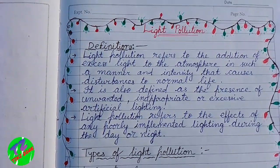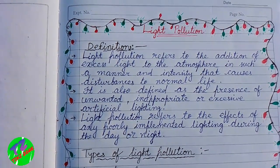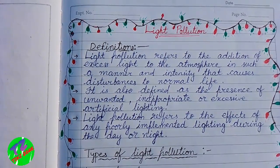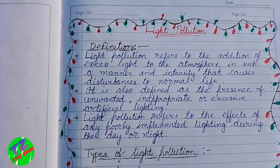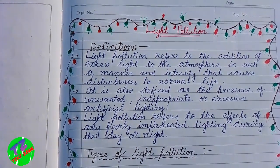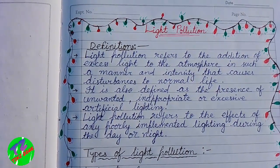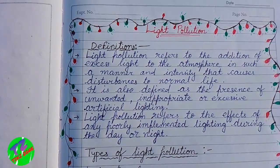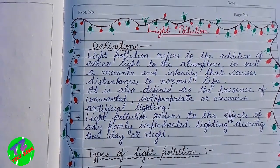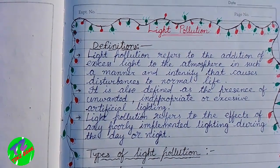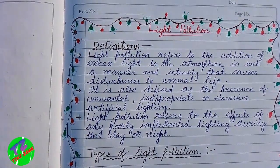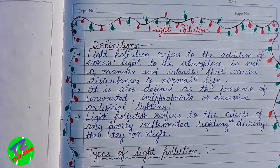Light pollution refers to the addition of excess light to the atmosphere in such a manner and intensity that causes detriment to normal life. It is also defined as the presence of unwanted, inappropriate or excess artificial lighting. Light pollution also refers to the effect of any poorly implemented light during the day or night.